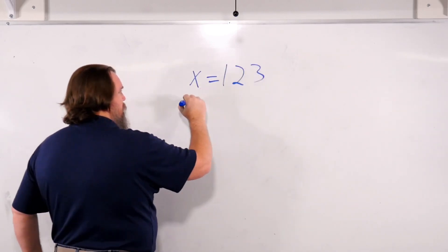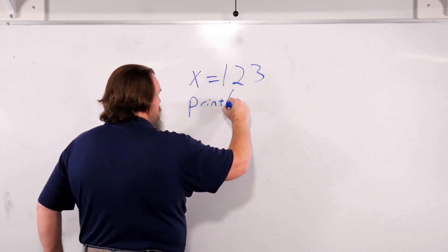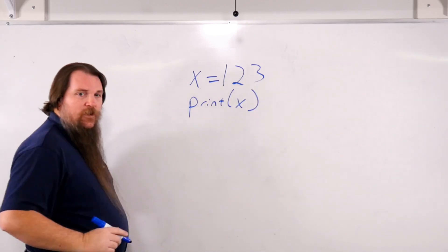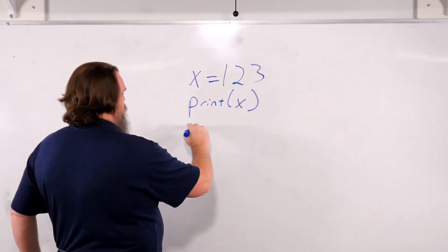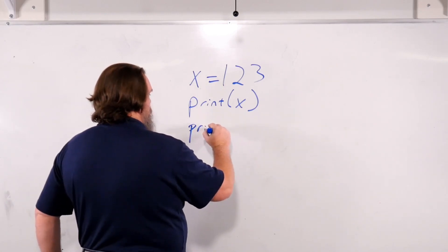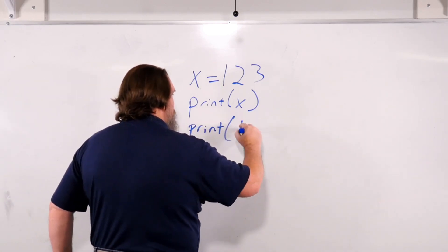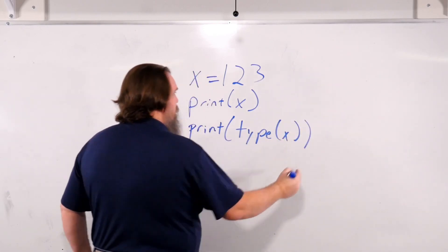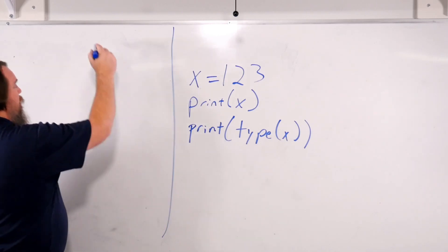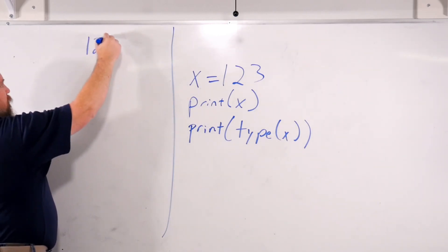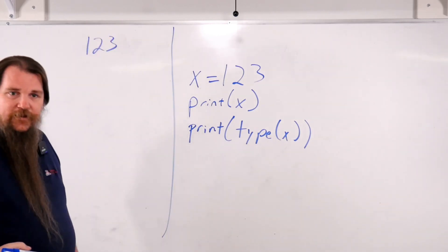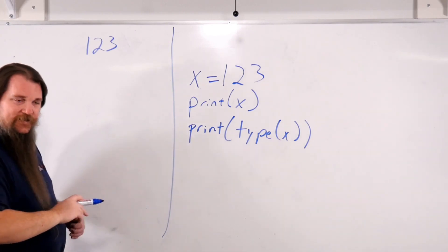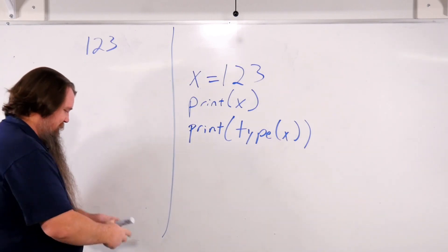We know that we can print x. We can also ask it to print the type of x. Now what is this going to print? Well, on the first line, it will print one two three. And on the second line, let's actually try this live so I get it exactly correct.